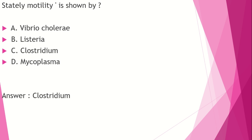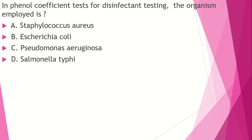This is the phenol coefficient test for disinfectant testing. The organism employed is: Staphylococcus aureus, E. coli, Pseudomonas aeruginosa, or Salmonella typhi. The answer is Salmonella typhi. In disinfectant testing, we have the in-use test, Rideal-Walker test, Chick-Martin test, and the standard disinfectant test using phenol.